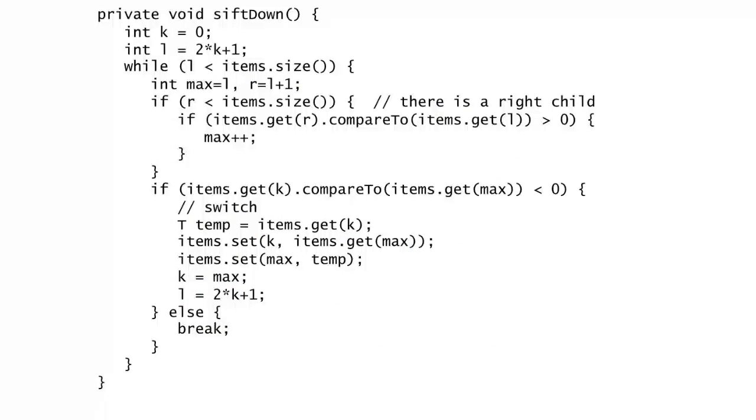Here's the code for the sift down method, putting together everything we have learned in the preceding discussion. k starts out at 0, and l is computed as 2k plus 1. The while loop spins as long as the left child index l is inside the bounds of the array list items, in which the heap entries are stored. In the code, we set max to l right off the bat.